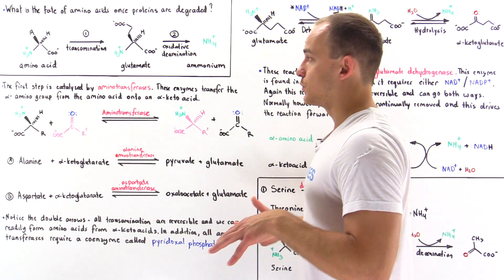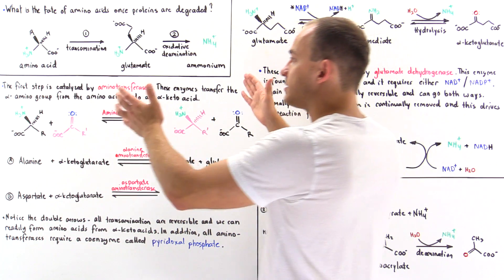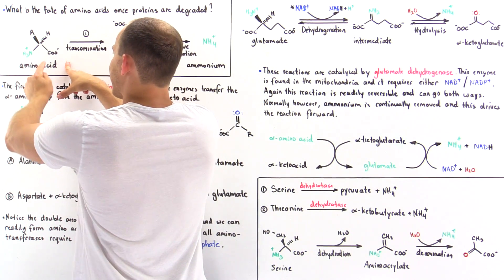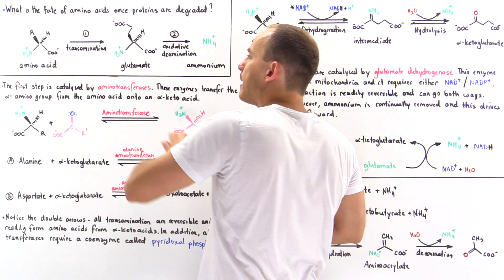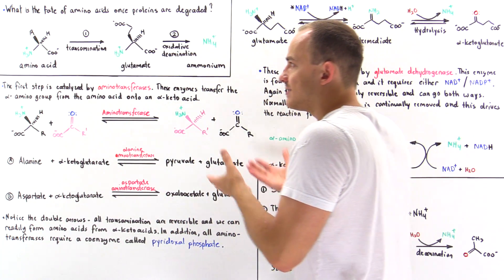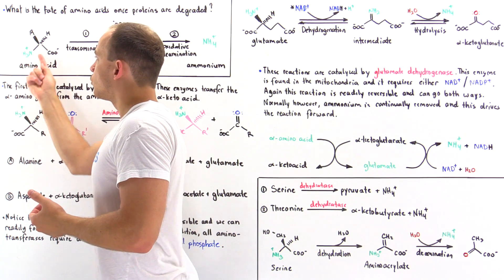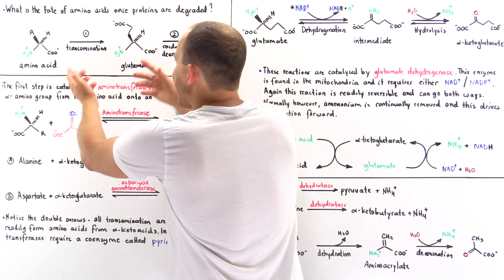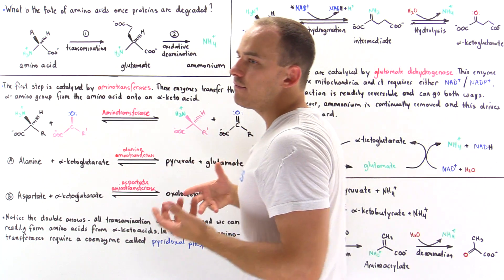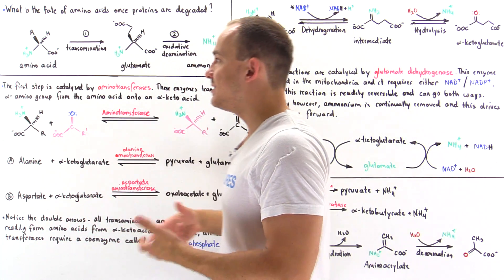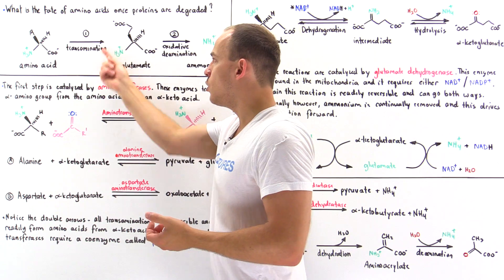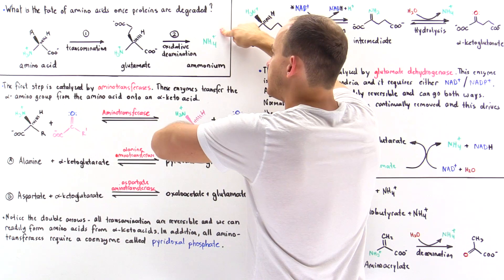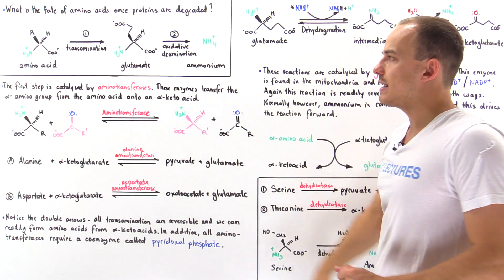This is a two-step process: first we take the amino acid and undergo a transamination step, in which we basically transfer the amino group onto a different molecule. We form glutamate. And in the second step, we have the deamination step — we remove the alpha amino group and form ammonium, at which point this ammonium can now be fed into the urea cycle.